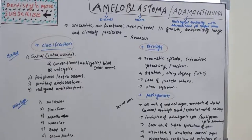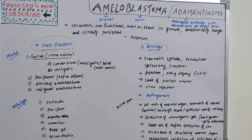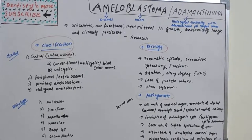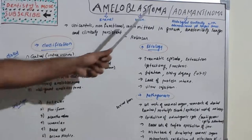Welcome back to a new session on dentistry. Today's topic is ameloblastoma, also known as adamantinoma. It is the most important topic in oral pathology under odontogenic tumors. We have previously seen AOT (adenomatoid odontogenic tumor) and CEOT (calcifying epithelial odontogenic tumor). Now let's move on to ameloblastoma, which originates from dental-related tissues.